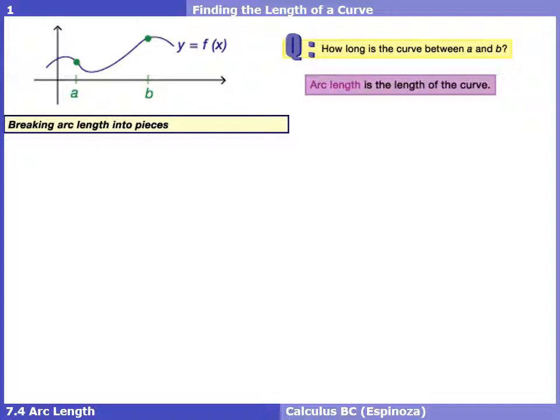The way we're going to look at this is we're going to break this arc length into pieces, kind of like what we did when we first tried to find an area. When we couldn't find area, we considered using rectangles, and then we worked our way up to adding up an infinite amount of rectangles. In this chapter with volume, while we couldn't find the volume exactly of a solid of revolution, we started off with a disk, and then we worked up to adding up an infinite amount of disks.